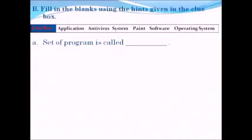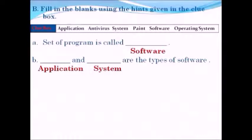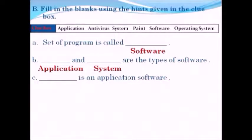The first blank: the set of programs is called software. Next, application and system are the types of software. Then, paint is an application software.